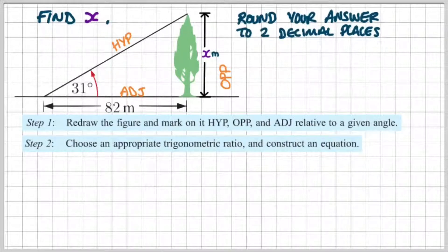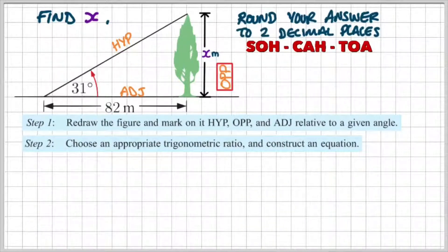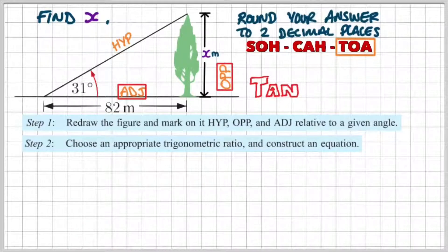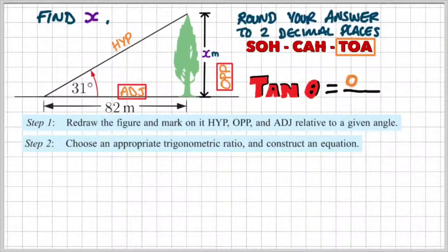Step two, we're going to choose an appropriate trigonometric ratio and construct an equation. Using SOH-CAH-TOA, I know that I'm going to be finding the opposite, and I have the adjacent. So opposite and adjacent is the tan ratio. Tan theta equals the opposite over adjacent.